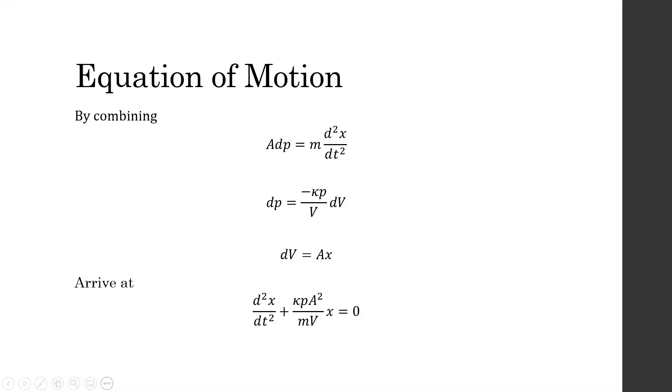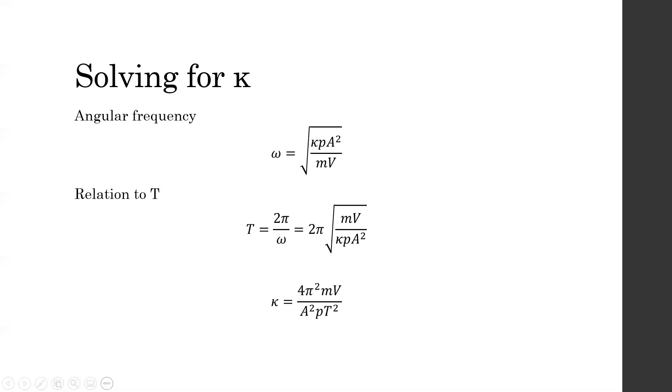This is a second order linear equation. In these types of equations, we define the constant coefficient of x to be the angular frequency, omega, squared. Therefore, the angular frequency is equal to the square root of the coefficient. We can relate this to the period of oscillation, T, via T equals 2π over omega. Rearranging this for kappa results in the bottom equation.